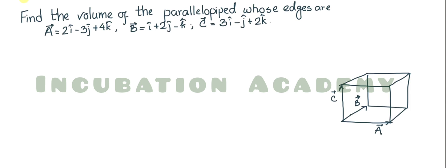Obviously, if you want to find the volume of something, you calculate the base area and then multiply by the height. If we calculate a cross b, this gives the area of the shaded base portion. The direction of the area vector is perpendicular to that surface, and here it is along the normal — parallel to the c vector.